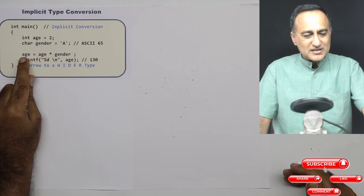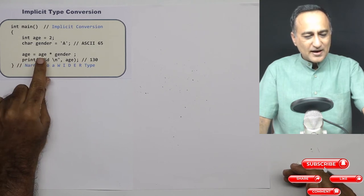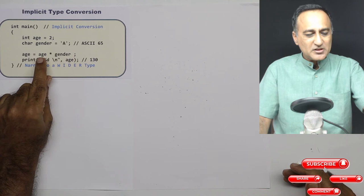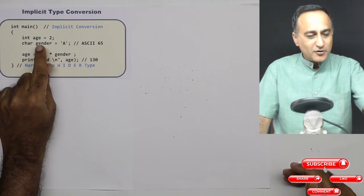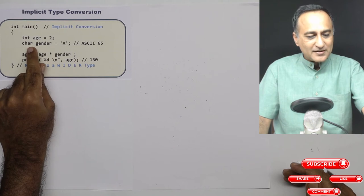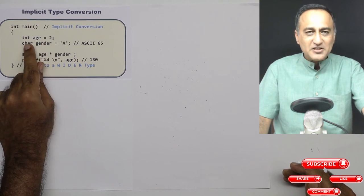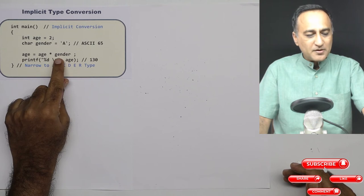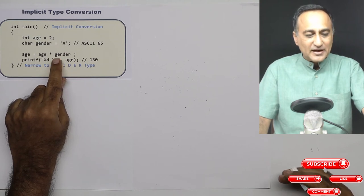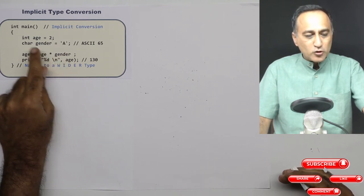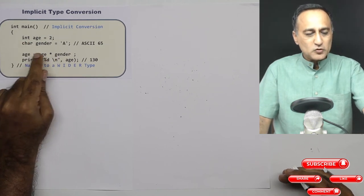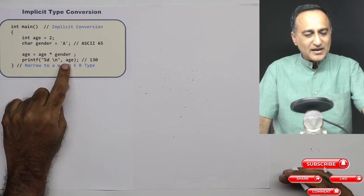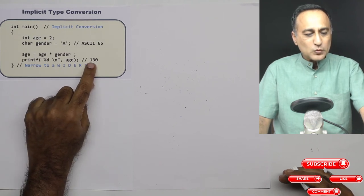Next what I am doing is I am saying age and I am multiplying it by the gender, so in this case age is 2, gender is 65. But if you notice, gender is of the type character whereas age is of the type integer. So in order for this multiplication to happen, what the C compiler does is it promotes gender also to the type of int and then multiplies. So now when you print the age, age is going to print as 130.